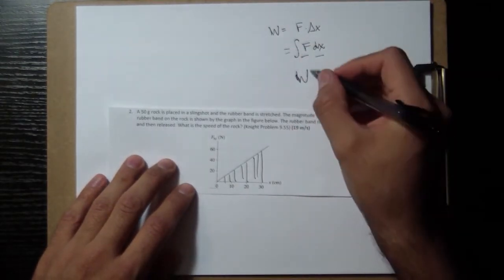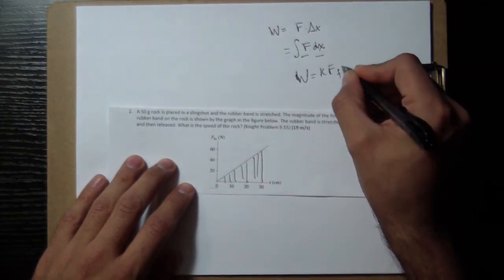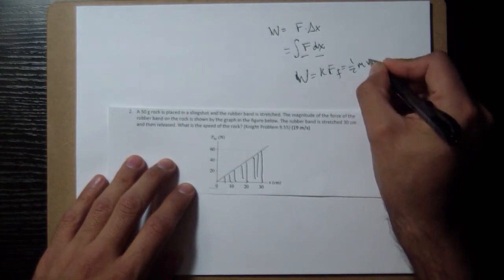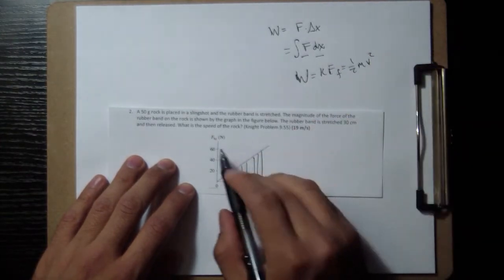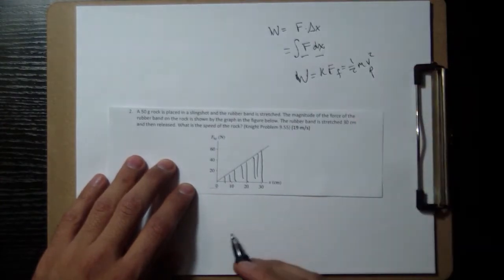So that work that we get is going to end up being equal to the kinetic energy final, which is going to be 1/2 mv squared, and we're looking for the speed of the rock at the end, so we're going to be looking for this v.